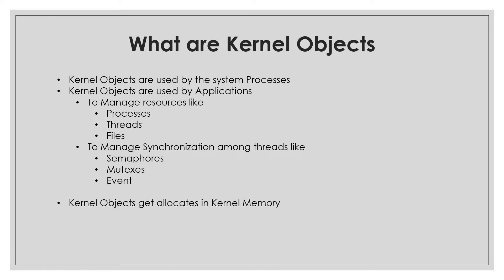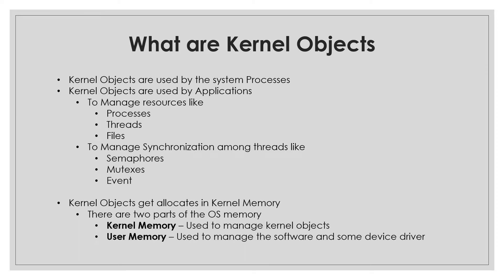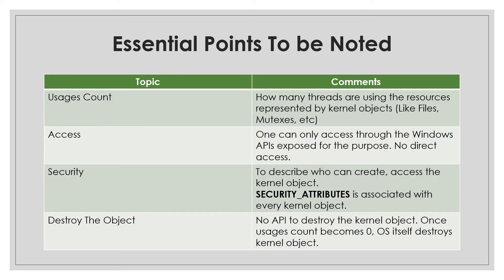Kernel objects get allocated in kernel memory. There are two parts of operating system memory. The first is kernel memory, which is used to manage the kernel objects. All the kernel objects we are discussing are allocated in kernel memory by the operating system, and their lifetime is managed by the OS. The other type is user memory, which is used to manage software applications and some device drivers.